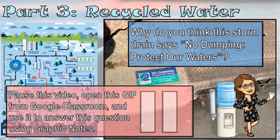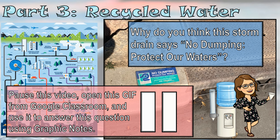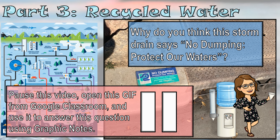Please pause this video and open up this super complicated GIF over on the left. Look at it closely — zoom in, zoom out, do what you have to do. The GIF is over on Classroom. Once you've analyzed this GIF, answer this question using graphic notes for part three recycled water: why do you think the storm drain says 'no dumping, protect our waters'? After all, it's all just going down the drain, right? Or is it? Please pause the video now.